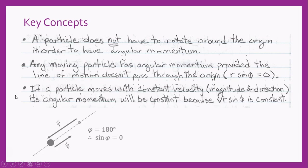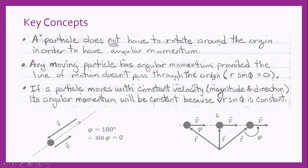The third key concept is: if a particle moves with constant velocity — that is, both magnitude and direction are constant — its angular momentum will be constant because the expression v r sine phi is constant. Let's take a look at that visually.